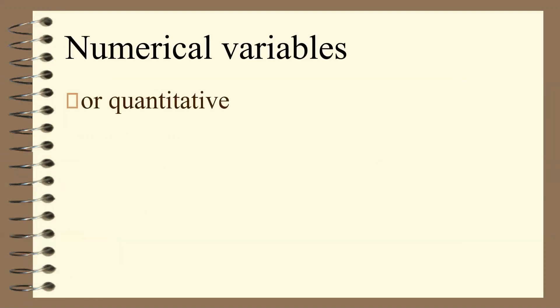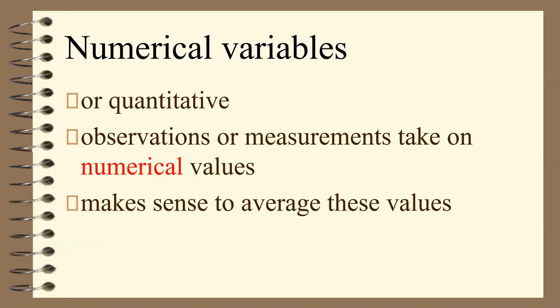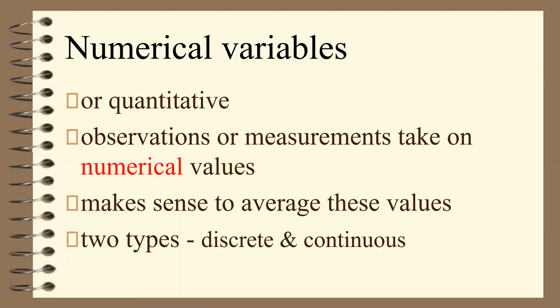Numerical variables are numbers — they are quantitative, meaning there is a quantity. They are observations and measurements that take on numerical values, and it makes sense to average these. You can add them together.